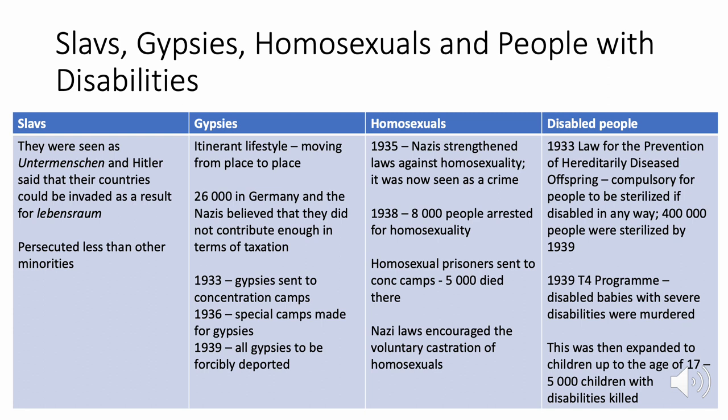For homosexuals, the Nazis strengthened laws against them in 1935, making it a criminal offence. In 1938, 8,000 people were arrested for homosexuality and many were sent to concentration camps. The Nazis also encouraged voluntary castration of homosexuals. For disabled people, the 1933 Law for the Prevention of Hereditary Disease Offspring made sterilisation compulsory for disabled people — 400,000 people were affected. In 1939 the T4 programme ordered the murder of babies with severe disabilities, later expanded to children up to age 17 — killing 5,000 disabled children.